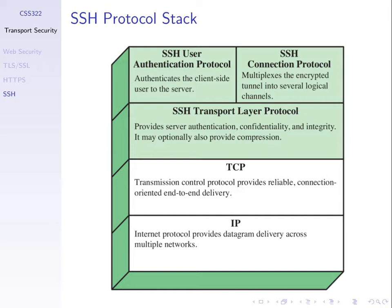Similar to SSL, SSH uses TCP. Even though SSH has a component called the SSH transport layer protocol, it doesn't do what TCP does. They're both transport layer protocols but they do different things. TCP handles retransmissions, sets up a connection with the SYN handshake, flow control, and congestion control. SSH transport layer focuses on securing the data sent across TCP — it doesn't replace TCP's reliability mechanisms.